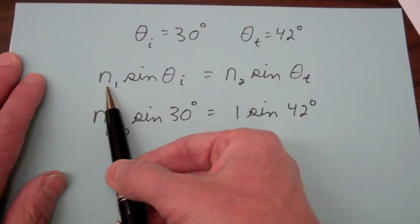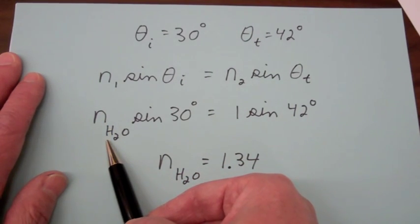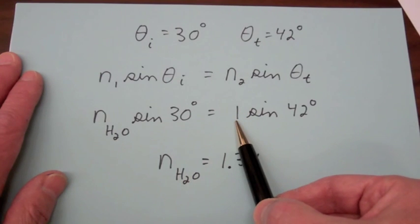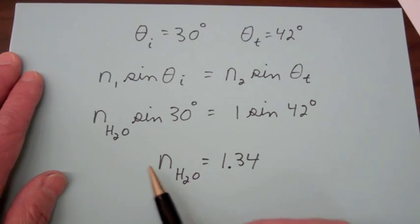In the water, N sub one is the refractive index of water. N sub two is the refractive index of air which is about one. So solving we get a refractive index for water of one point three four which is close to if you look up the value of the refractive index of water you would find it's one point three three.